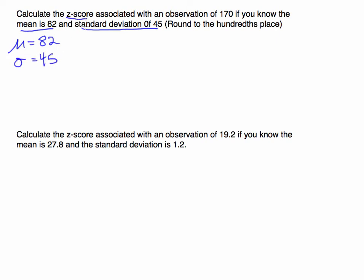Remember, a z-score is just telling us we have a particular observation of 170. We know the mean, we know the standard deviation. We want to know, when you calculate a z-score, it's telling you how far is this observation from the mean.